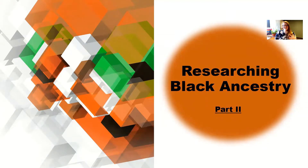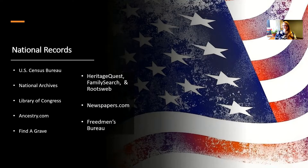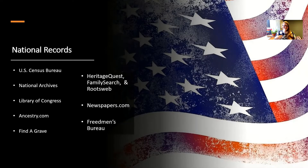In part two we're going to start looking at actual resources you might want to use for your genealogy research, and we're specifically going to look at national records. National records really just means records that aren't directly related to Mississippi or housed in the state of Mississippi. Some of these are databases, some are websites, some are government institutions. There's a variety here, and this is not all of the resources, but it's a nice list to get you started.